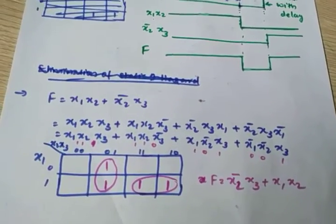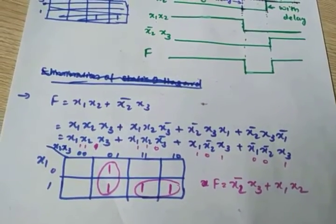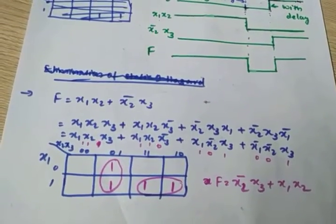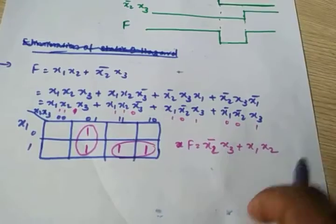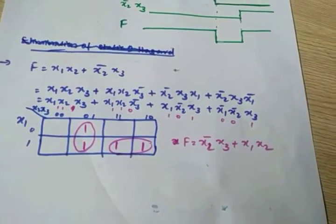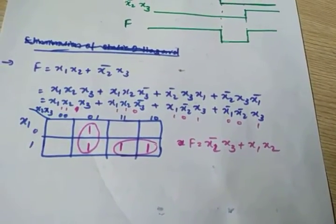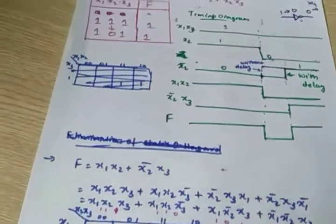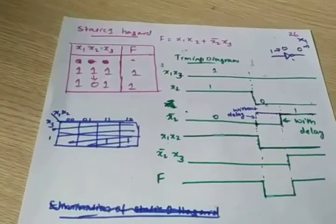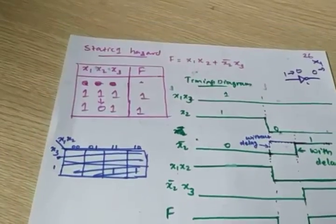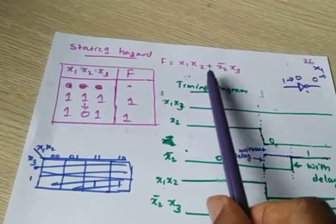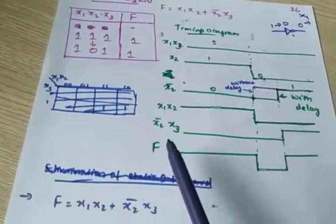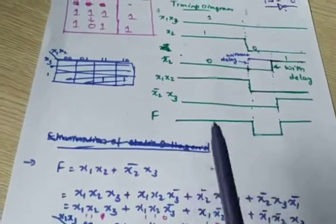In this lecture I will discuss how to eliminate the static hazard. Here I am discussing how to eliminate the static 1 hazard. Consider the previous example — the same example: f(x) = x1x2 + x2_bar x3. This is the equation.